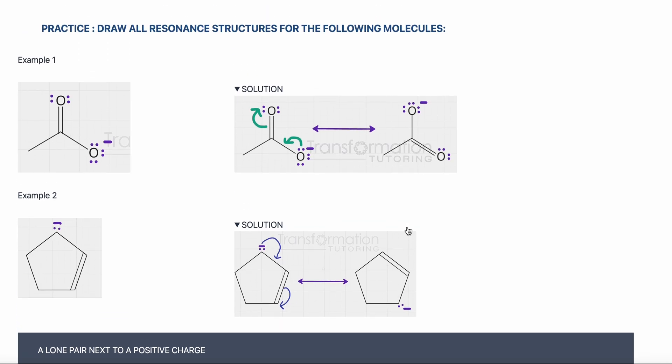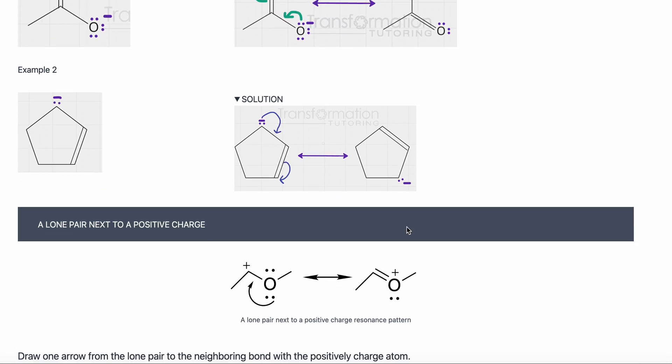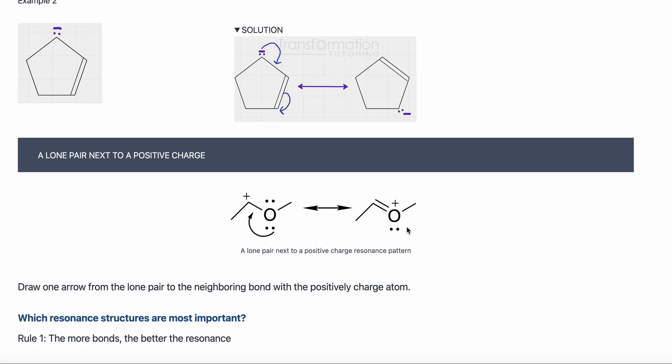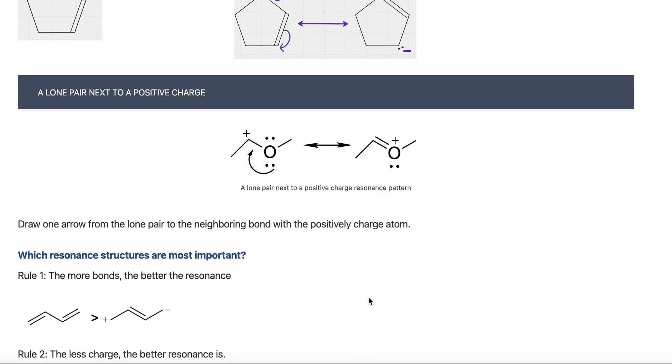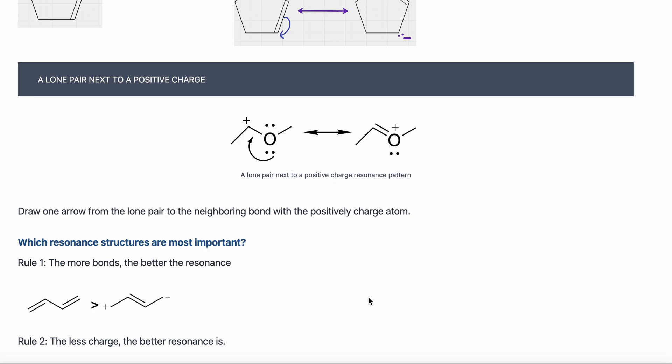These two patterns are most often encountered in organic chemistry. I'm going to show you a third resonance pattern as well, and then we will talk about how to figure out which resonance is most important.